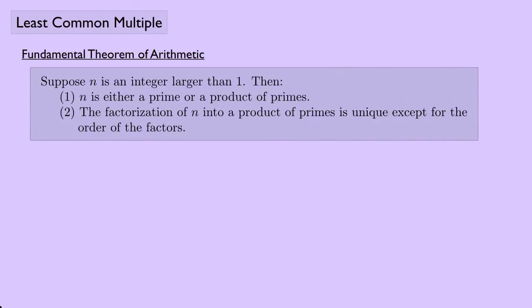Let's review the fundamental theorem of arithmetic. Suppose n is an integer larger than 1. Then first, n is either a prime or it's a product of primes, and second, the factorization of n into a product of primes is unique, except for the order of the factors.